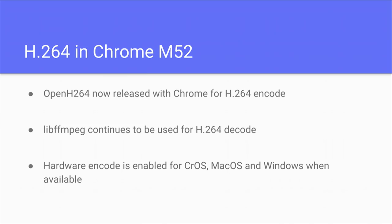We did what we committed to do — we added H.264 in Chrome. We make use of OpenH.264 on the encoding side and continue to use libavcodec for decoding. H.264 in Chrome has lower computing requirements because on certain platforms we have enabled hardware codecs to make it more efficient — not creating as much heat, not switching on the fan.